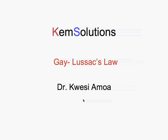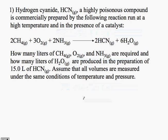We're going to take a look at solving some gas stoichiometry problems. Hydrogen cyanide, a highly poisonous compound, is commercially prepared by the following reaction run at a high temperature and in the presence of a catalyst. How many liters of CH4, O2, and NH3 are required, and how many liters of H2O are produced in the preparation of 15 liters of HCN?